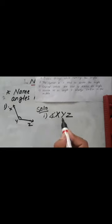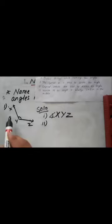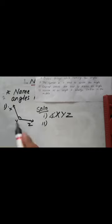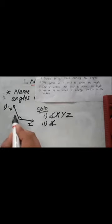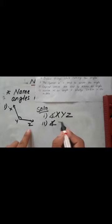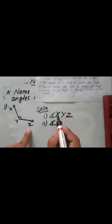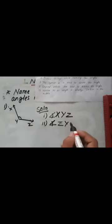Now let's see another way to name this angle. We just have to reverse it. Before, we wrote angle XYZ — now just reverse it. Let's write the symbol of angle first, then: angle ZYX. Previously X was first, now Z is first — angle ZYX.